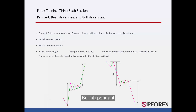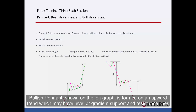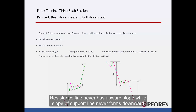Bullish Pennant, shown on the left graph, is formed on an upward trend which may have a level or gradient support and resistance lines. The resistance line never has an upward slope while the slope of the support line never forms downwards.